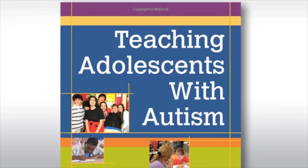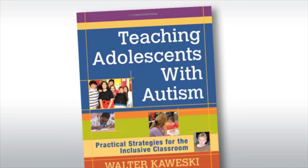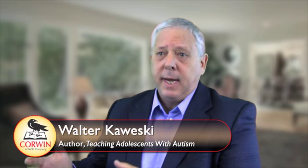I really believe that the book I've written is going to help general education teachers because frankly there aren't a lot of materials available for kids and for general ed teachers working with kids who are diagnosed with autism in the age range between 12 and 18-19. There's lots of books available for younger kids.